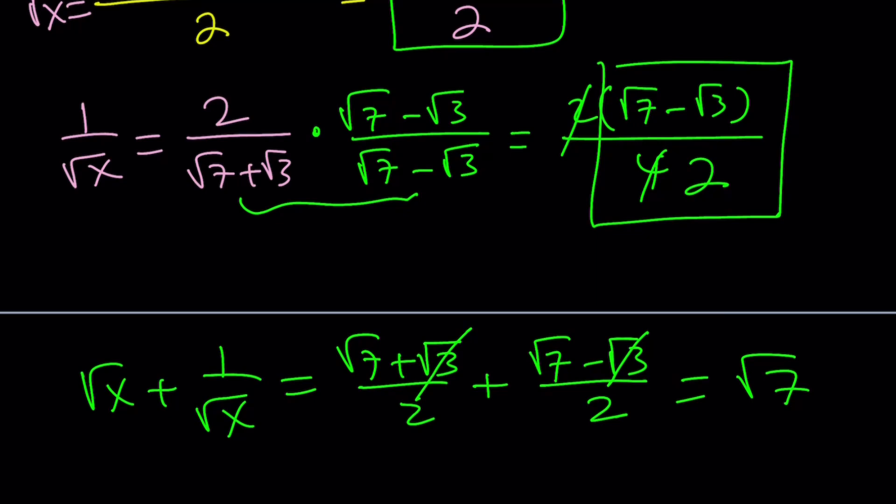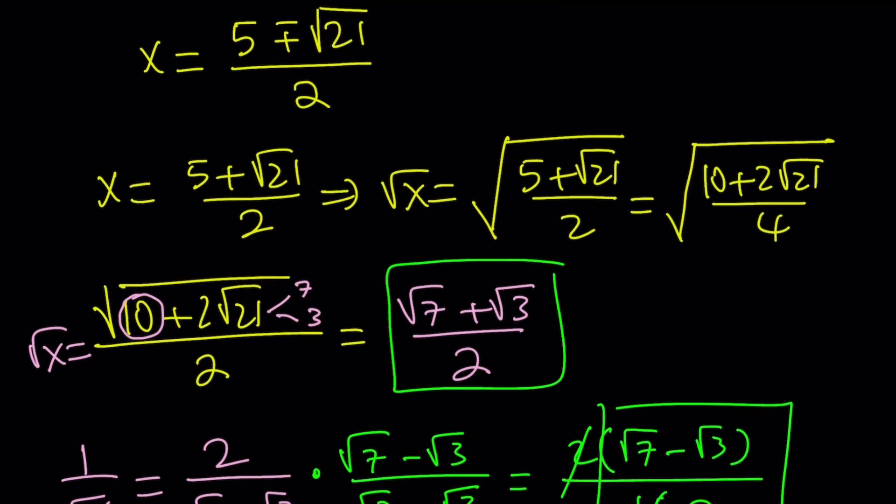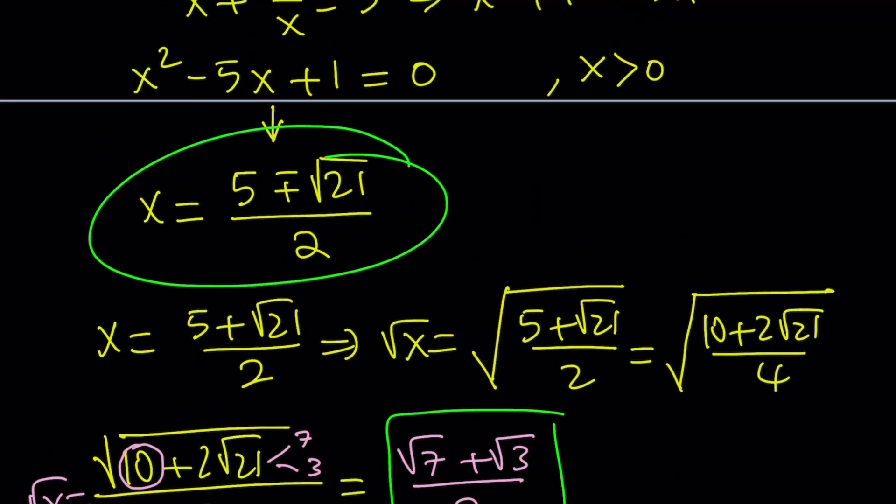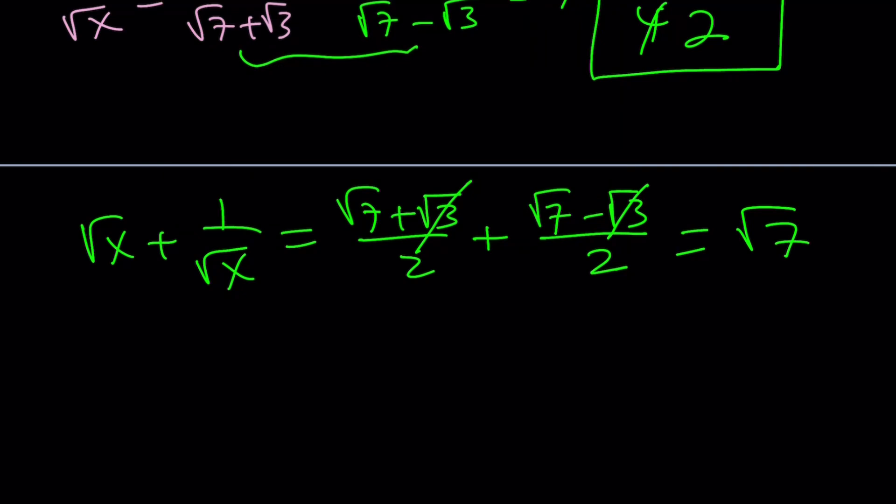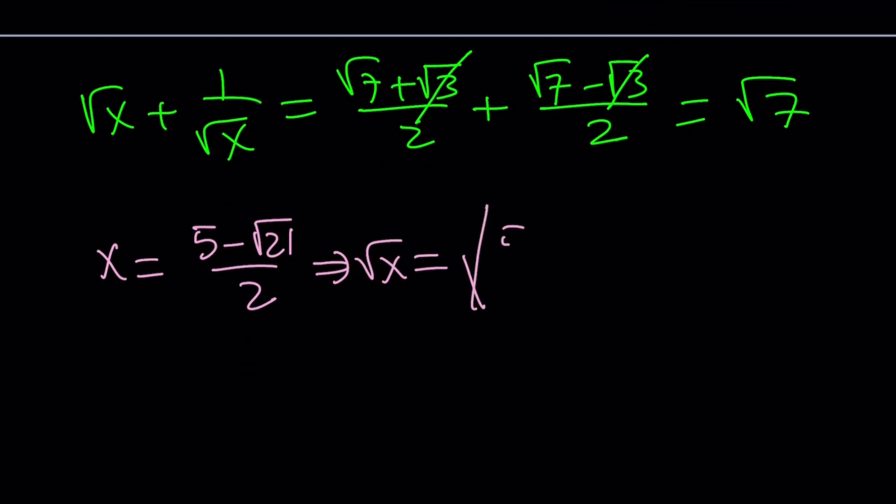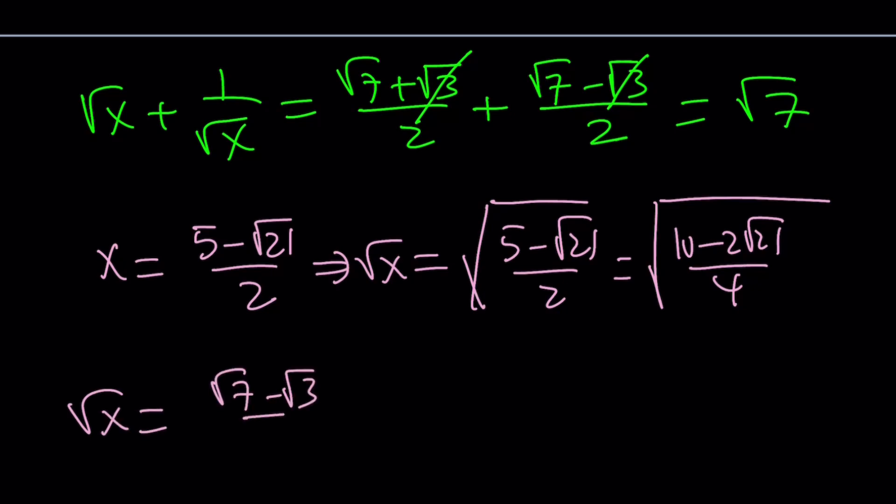Now, we're going to use the other root, because there were two solutions to this equation. The quadratic gave us two solutions, so we're going to check the other one. If we use x equals the other one, which was 5 minus root 21 over 2, remember, I'm supposed to evaluate root x and then find the reciprocal. If you square root again, to keep a long story short, this is going to be 10 minus 2 root 21 over 4, and that is going to be root 7 minus root 3 over 2. Obviously, 1 over the square root of x is going to be its reciprocal, just like before, it's going to be root 7 plus root 3 over 2.